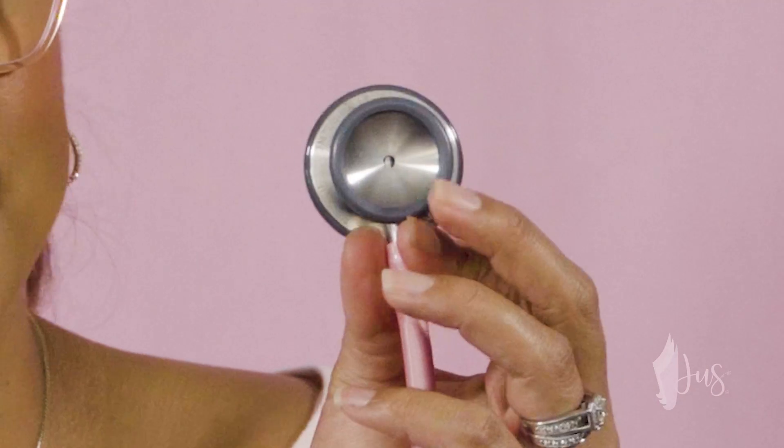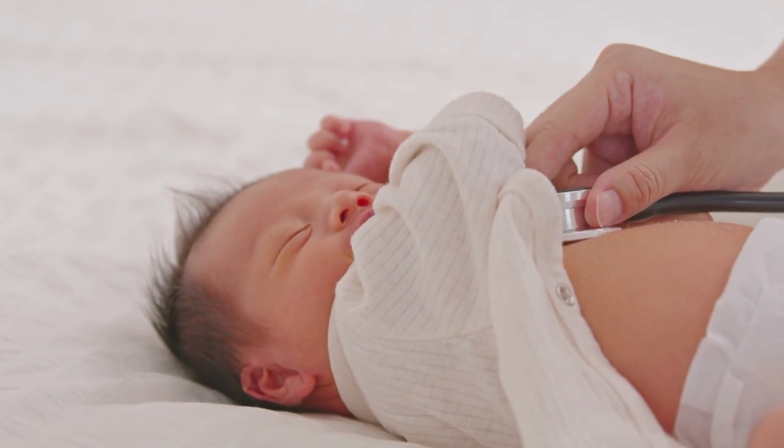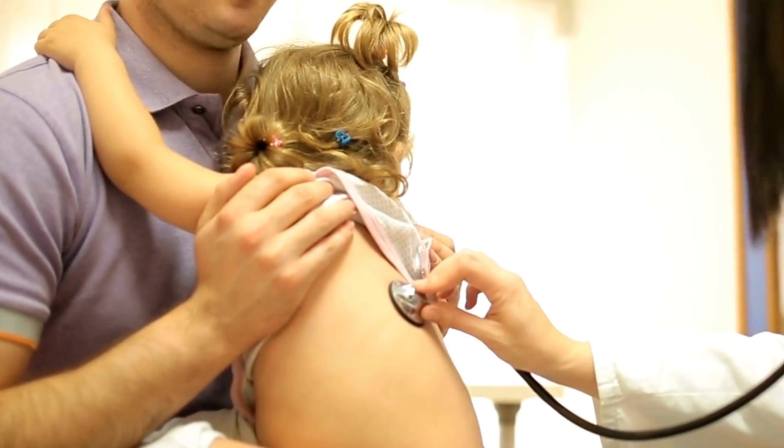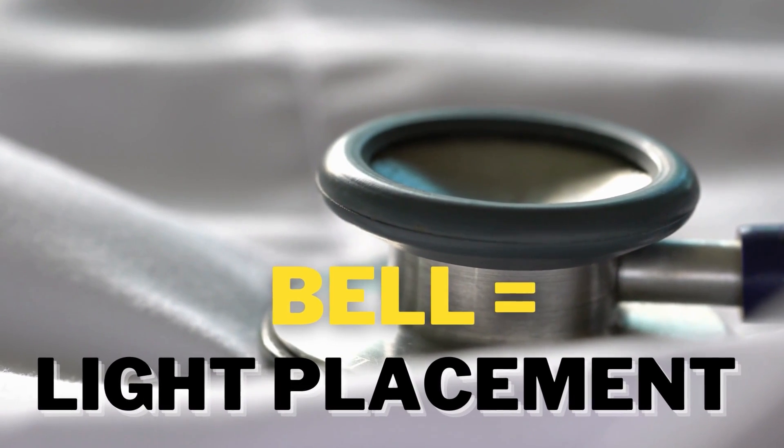The bell, on the other hand, is quite different. The bell is the smaller, concave part of the chest piece, and it's used to auscultate lower-frequency or lower-pitch sounds — for example, vascular sounds like heart murmurs or bruits. You might also notice the bell is used more often with infants and children, simply because it has a smaller surface area compared to the diaphragm. When you're using the bell, you place it very lightly over the patient's skin. A great way to remember what type of sound the bell transmits is the mnemonic 'bell low' — the bell transmits low sounds.